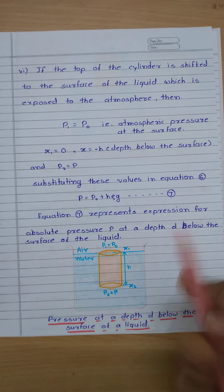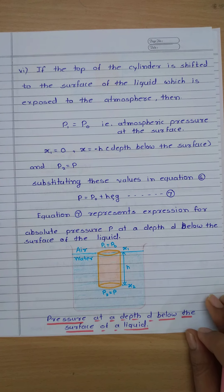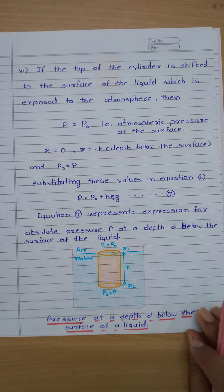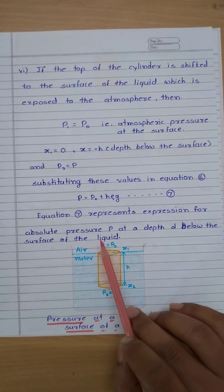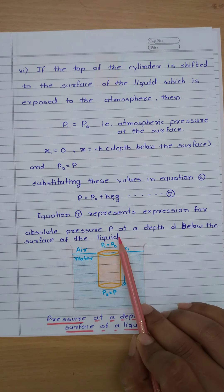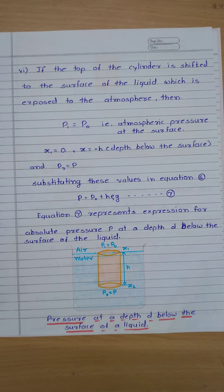Here h means height, rho means density of the liquid, and g means gravity. Equation number seven represents the expression for absolute pressure p at a depth h below the surface of the liquid.